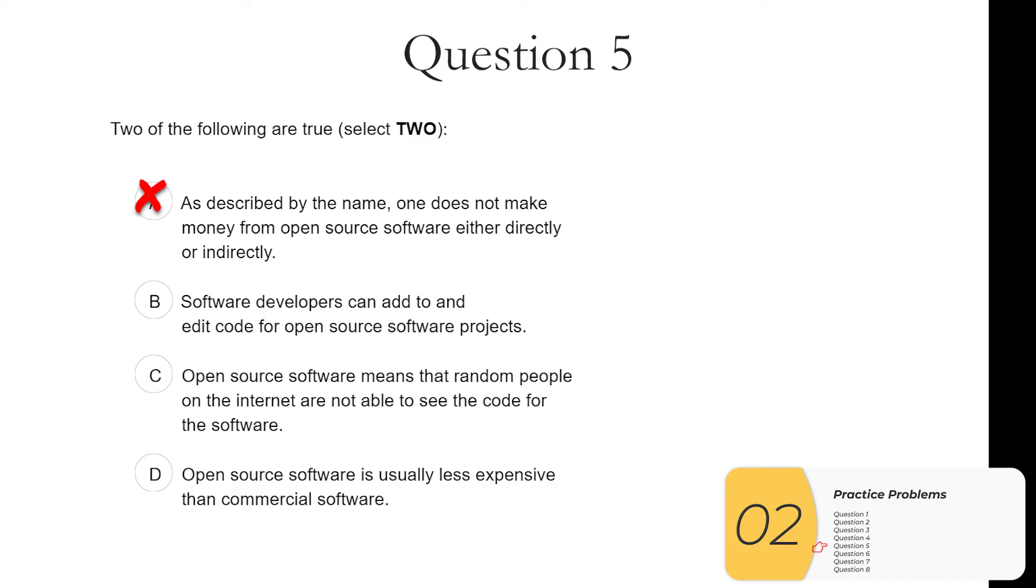B. Software developers can add to and edit code for open source software projects. This is true. C. Open source software means that random people on the internet are not able to see the code for the software. It's actually the opposite, exactly the opposite. Open source software means that any random person on the internet can see the code for the software. So C is not true. D. Open source software is usually less expensive than commercial software. This is true. At least directly, you may pay a price for support or knowledge or something like that, but the software itself is usually less expensive. So the answers we are looking for here are B and D.